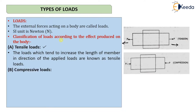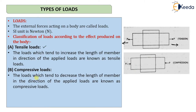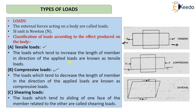The second type is compressive load. Loads which tend to decrease the length of a member in the direction of the applied load are known as compressive loads. As you can see in the picture, the load is applied towards the body, causing the member's length to get reduced.